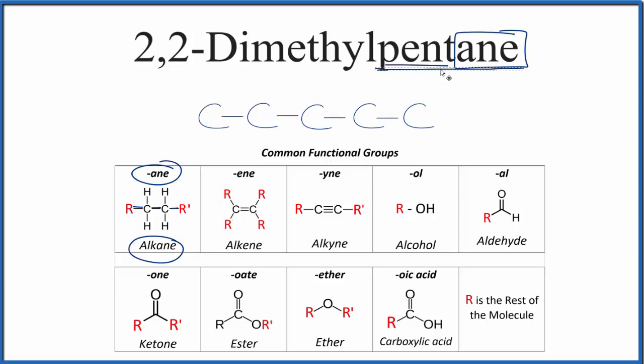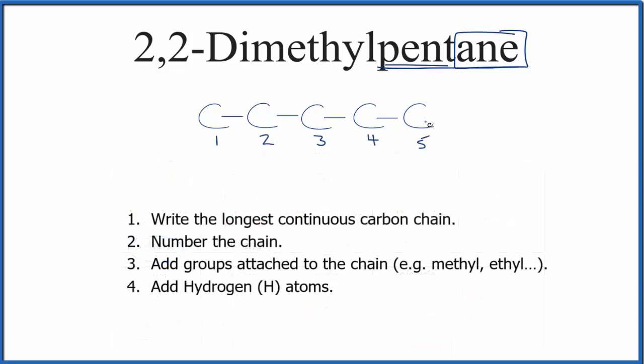So far, we have the structure for pentane here. Next, we need to number each one of these carbon atoms. Once we've numbered the carbon atoms, we can attach the groups to this main chain.